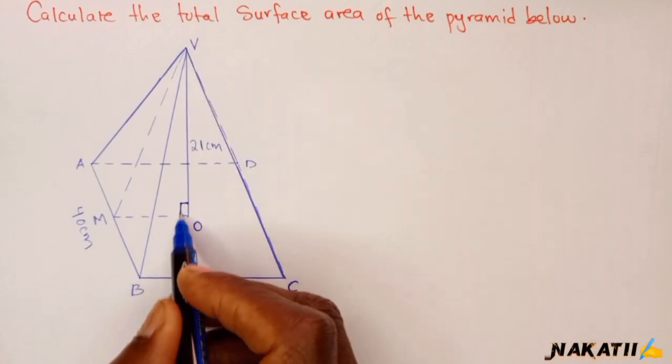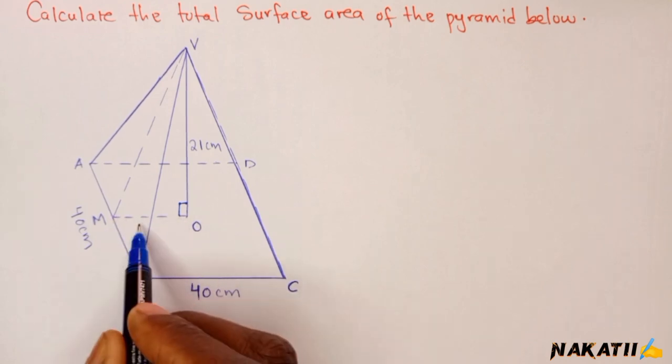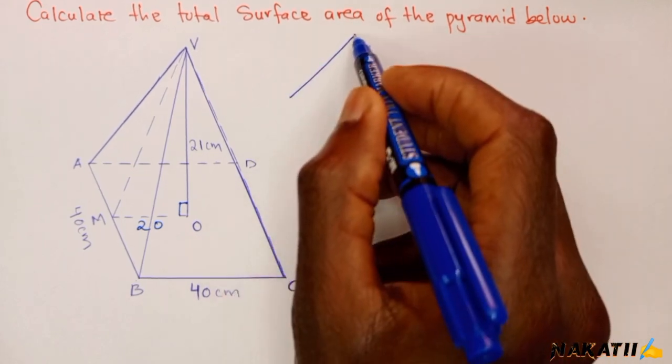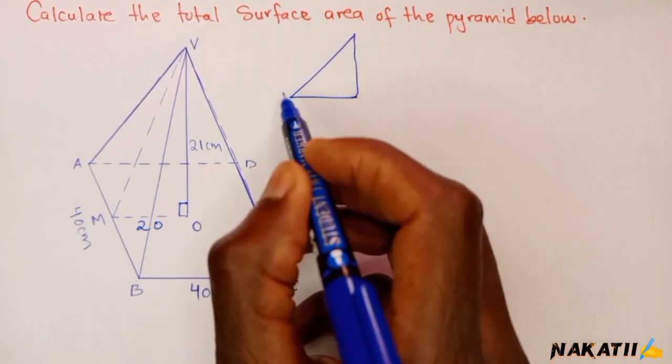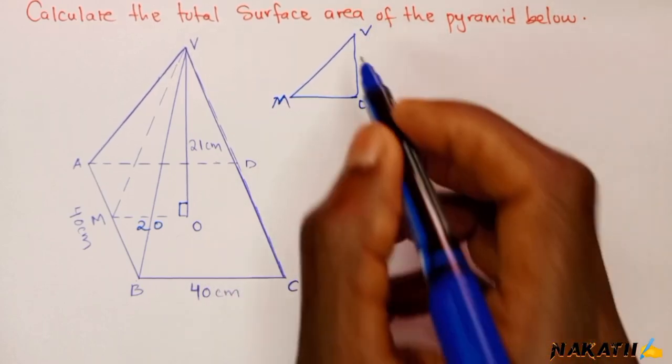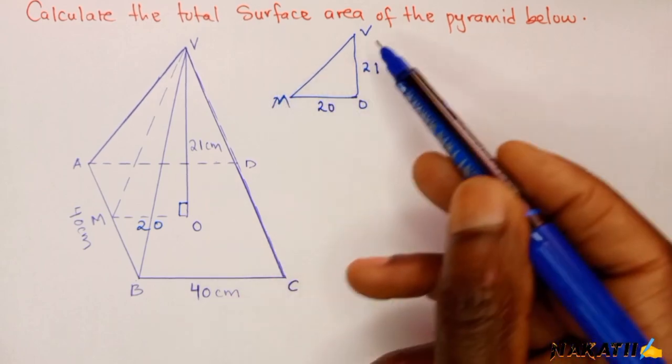From here is 40, meaning from here it will be 20. And therefore if we extract that one like this, which is MOV, we'll have this is 21 and this one here is 20. We need to find what is MV.